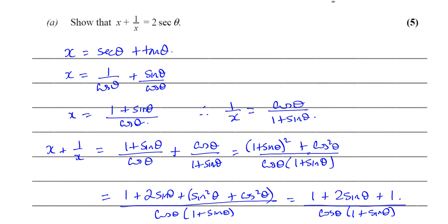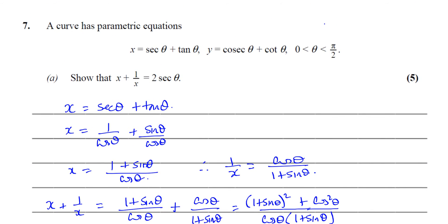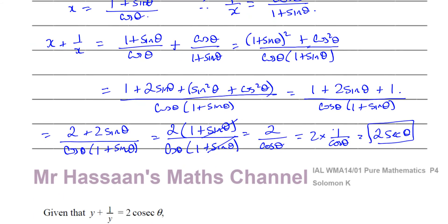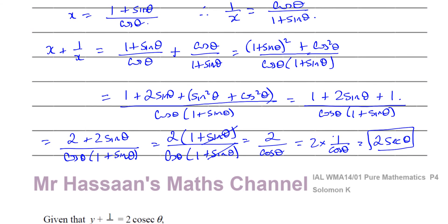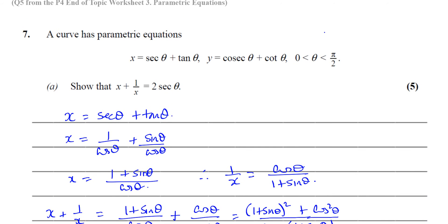We just expressed x and one over x in terms of sin and cos θ, added them together, and simplified — and we got what we had to get. That's the answer to part A.